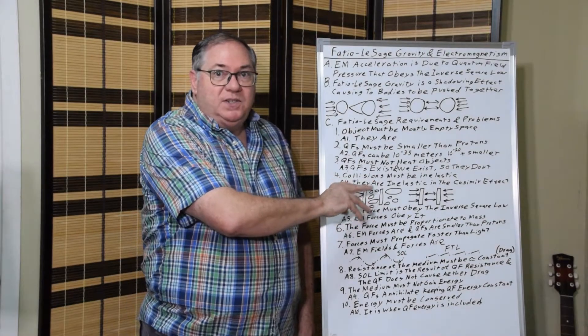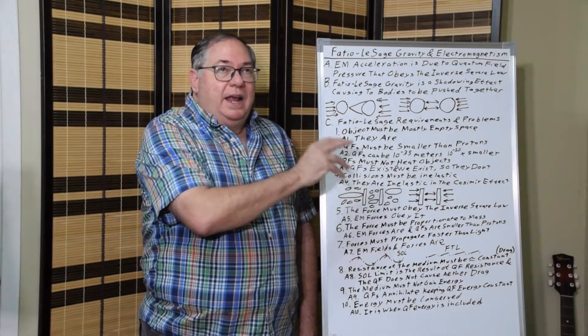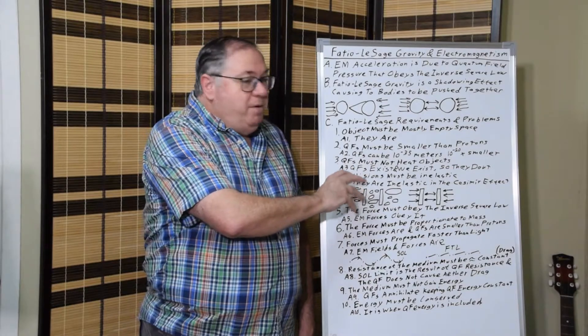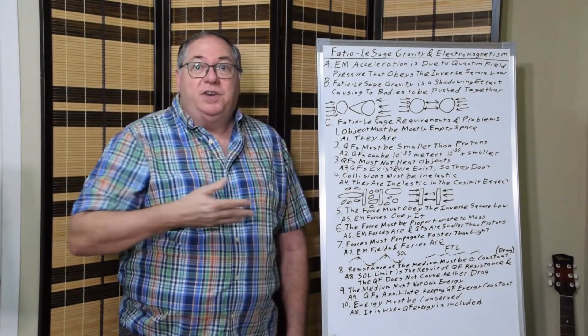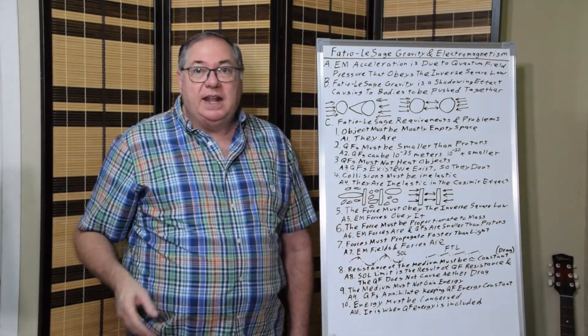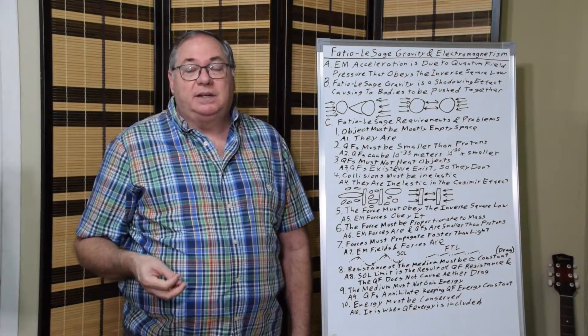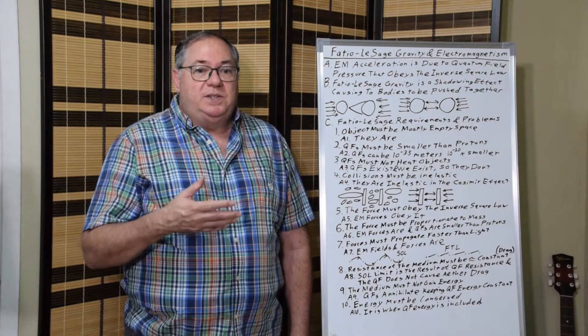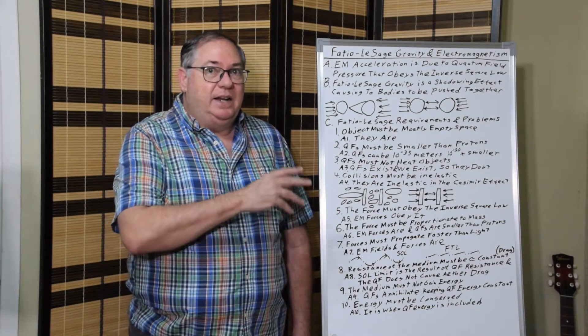and also black body radiation, they would start doing black body radiation. You would see photons coming off because they're gaining energy. And that doesn't happen in the Casimir effect. So we know that this theory doesn't happen, at least not at low energy.